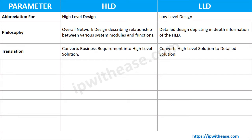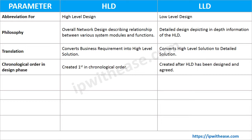Talking about translation from one form to another in a project life cycle, HLD converts business requirements into a high level solution and is created during the pre-sales or initial phase of a project. On the other hand, an LLD translates the HLD provided detail into a detailed design, henceforth called an LLD.